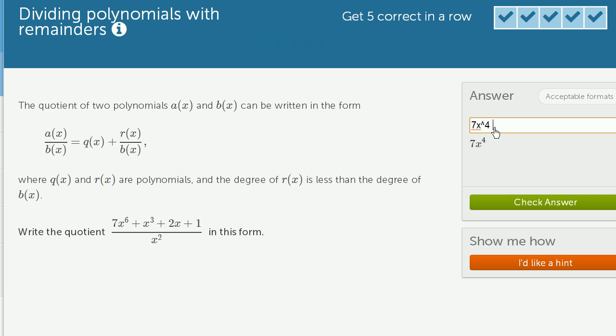And then same thing right over here, plus x to the third divided by x squared. Well, that's just going to be x, so plus x.